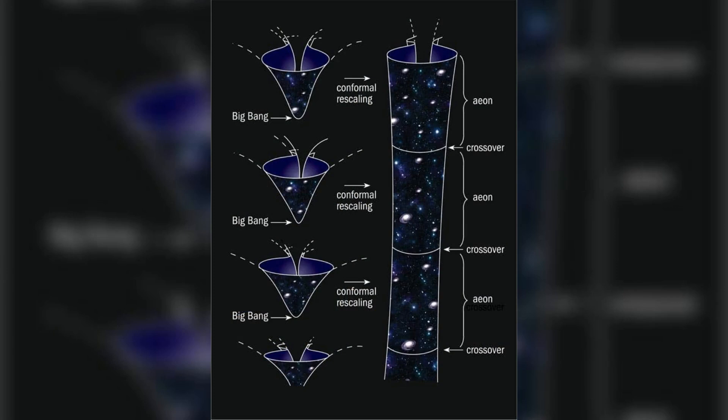Penrose's theory suggests that our universe will continue to expand infinitely until even black holes disintegrate into photons, paving the way for a new universe and another cycle, which he calls an eon.